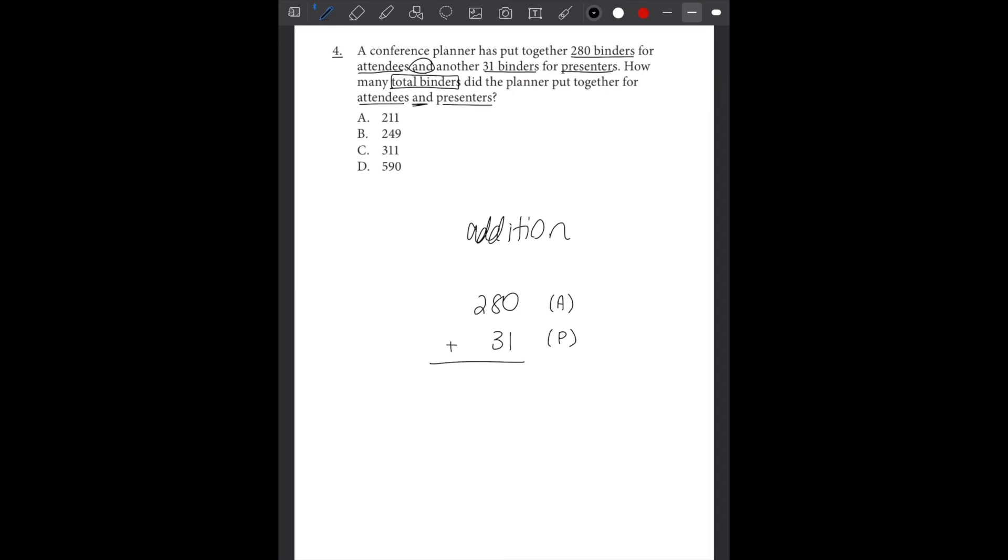Remember, when we're adding numbers with no decimals or anything, we can line up the whole numbers together. So 0 plus 1 would be 1, 8 plus 3 would be 11, and 1 plus 2 would be 3. So we have 311 total binders, which would be option C.